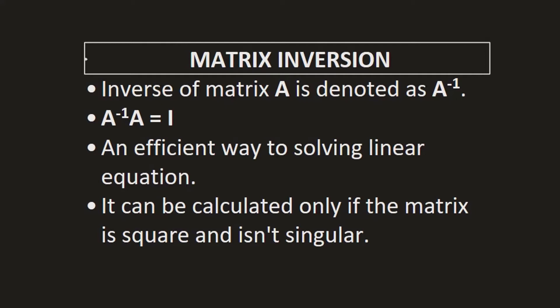Today we are going to discuss matrix inversion, or the inverse of a matrix. The inverse of a matrix A is denoted as A to the power minus one, or A inverse. A special property is that if you multiply the inverse of a matrix by the matrix itself, you get an identity matrix as output. Not all matrices have an inverse, and we will also discuss the conditions under which you can calculate it.